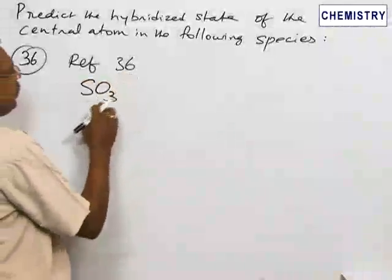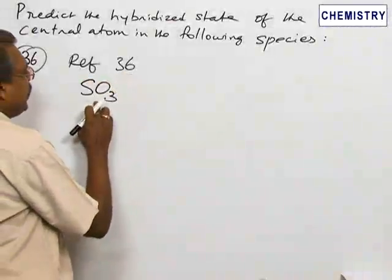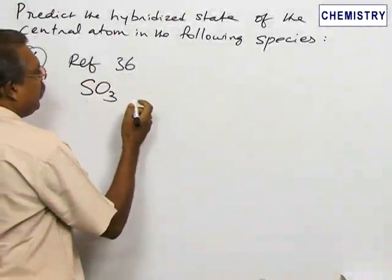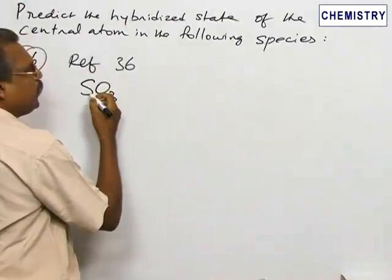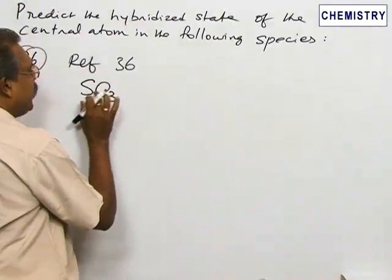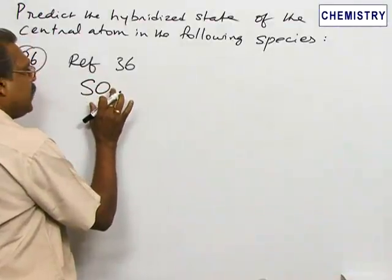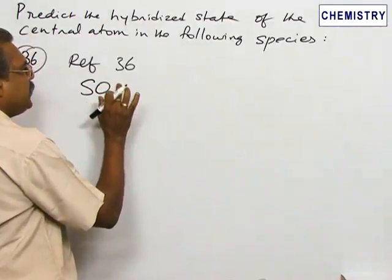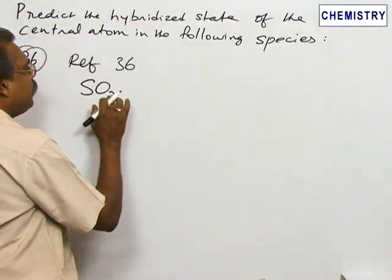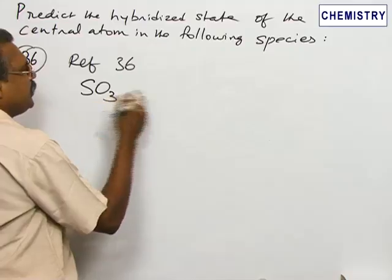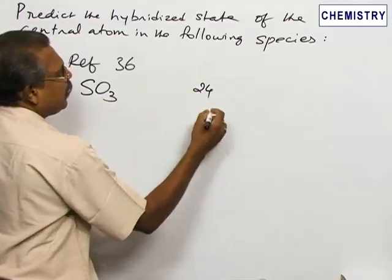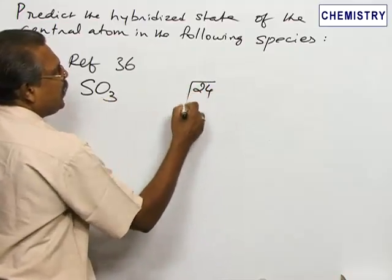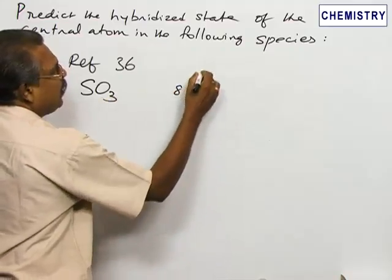Refer number 36 is sulfur trioxide SO₃. Here, sulfur and oxygen belong to the same group, therefore having 6 valence electrons each. 4 atoms × 6 = 24 electrons total. 24 should be divided by 8.